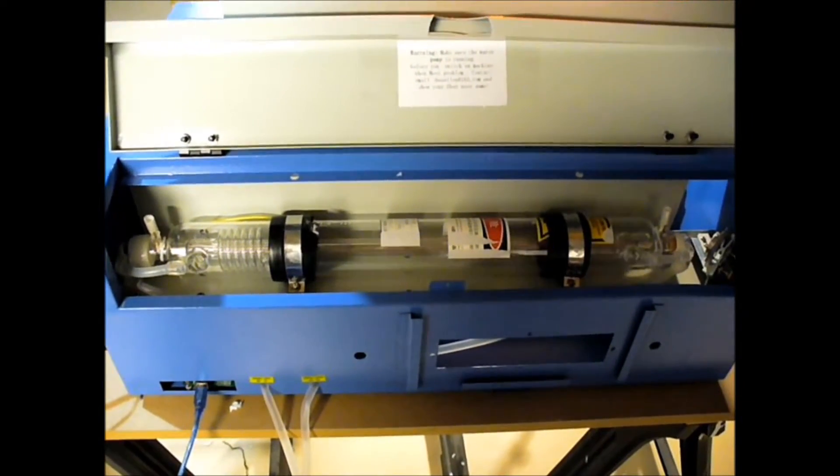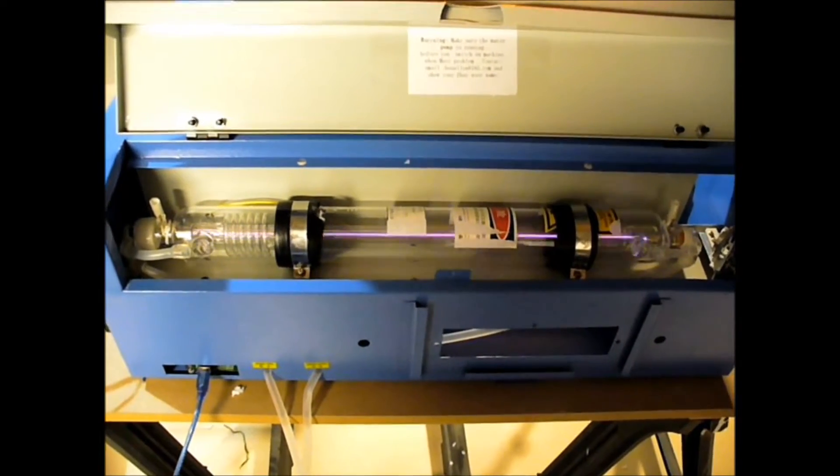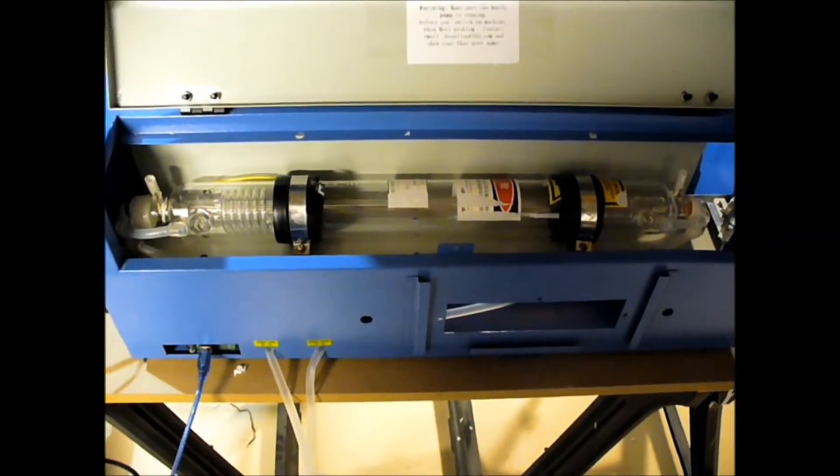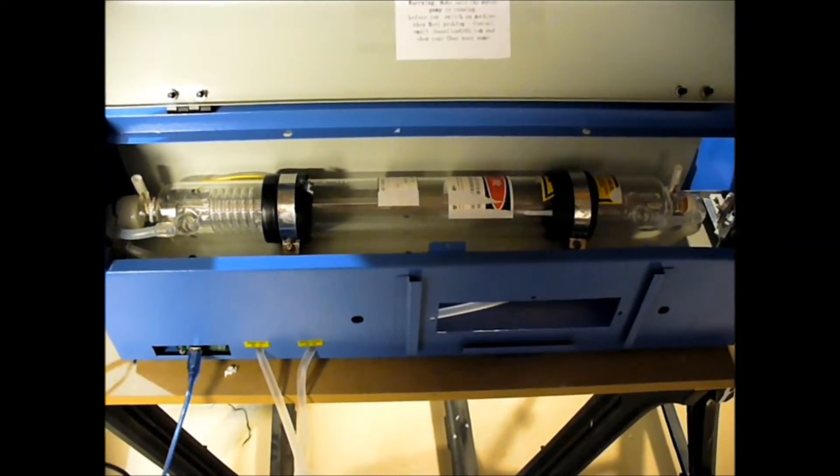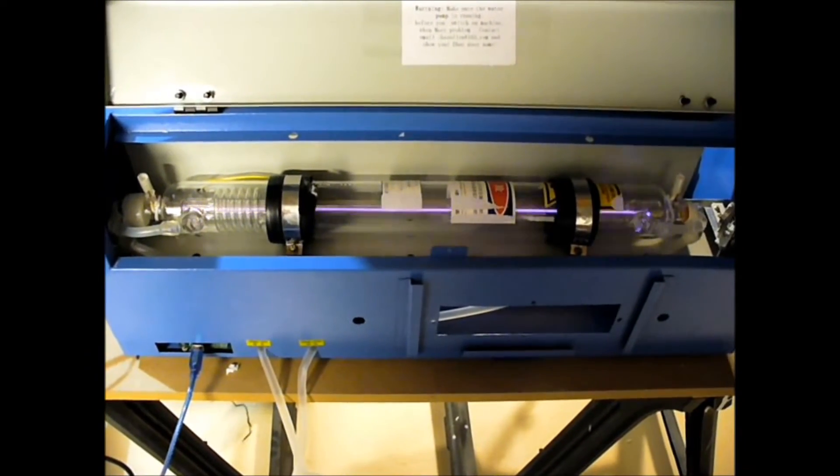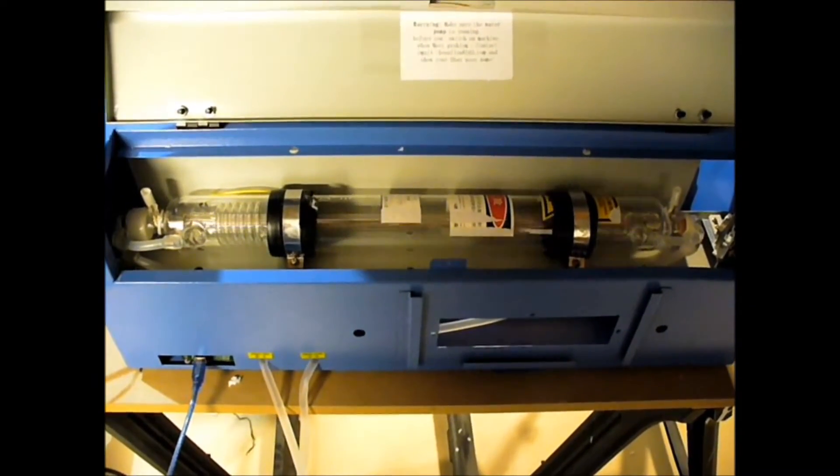Now this is operating in the ultraviolet spectrum. Sorry, not the ultraviolet spectrum, the infrared spectrum. Getting my things mixed up here. So we're not really seeing the light at the beam like we would in a visual light laser like something in the 400 nanometer range. This is operating, I think, well above a thousand nanometers. Which is actually more effective for a laser because it's working in a higher absorption range.